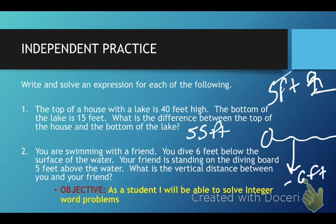And it wants to know what is the vertical distance. And vertical means straight up and down. What's the distance between you and your friend? Well, this negative six to zero is six feet. And then from zero to five is another five feet. So, six and five makes eleven feet. So, that should have been your answer.